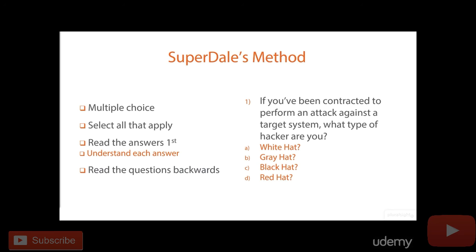The other thing I do is use the 'mark for review' feature. In the exam you have 125 questions and need to get 70 percent correct, which equates to about 90 questions. In the upper left-hand corner of the exam there is a box that says 'mark for review.' When I get to a question I'm confused by, I'll mark it and move on. At the end, it will ask if you want to review those marked questions and show you the list. If I only see six questions marked for review, I'm feeling comfortable. But if I see 70 questions marked for review, I didn't study well enough.